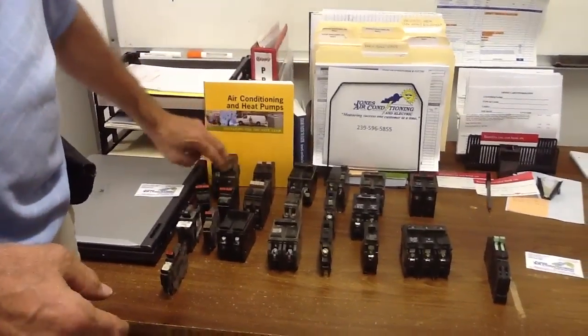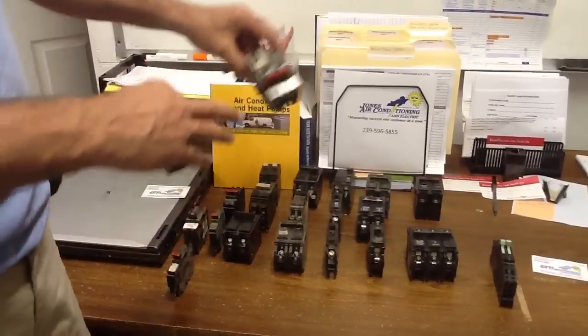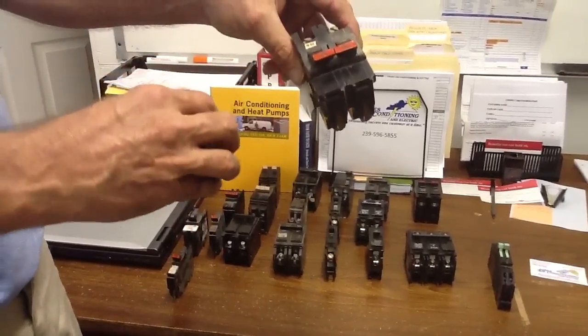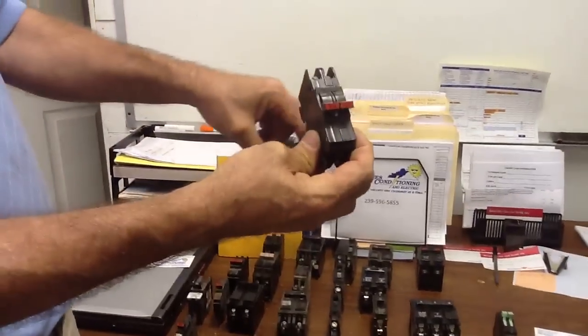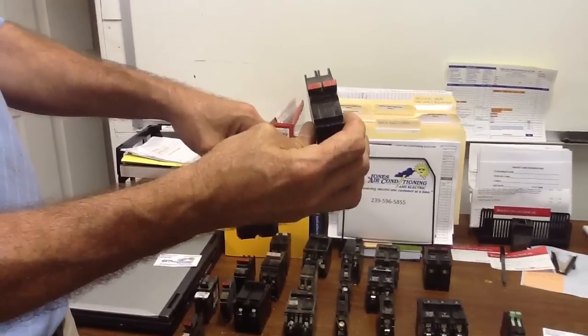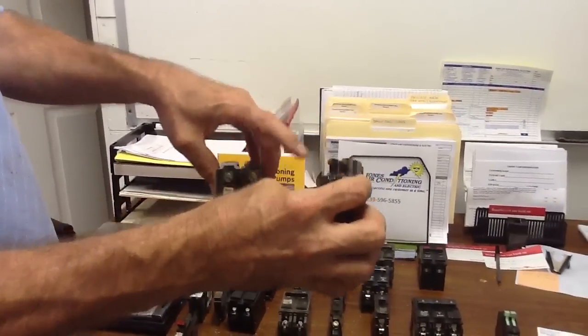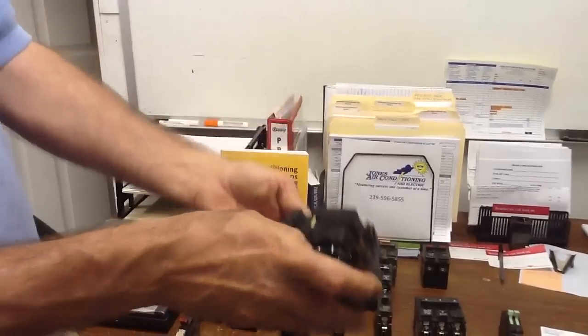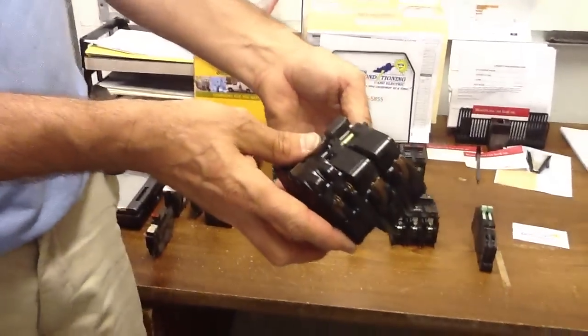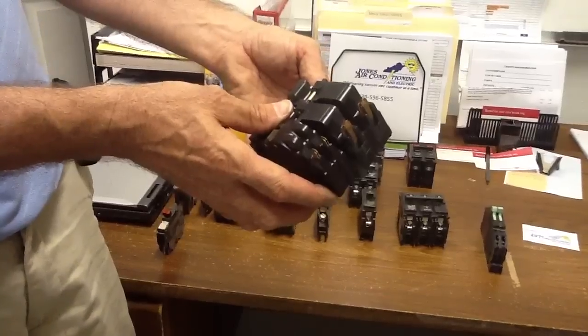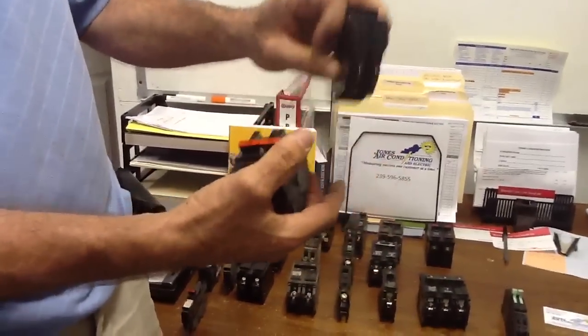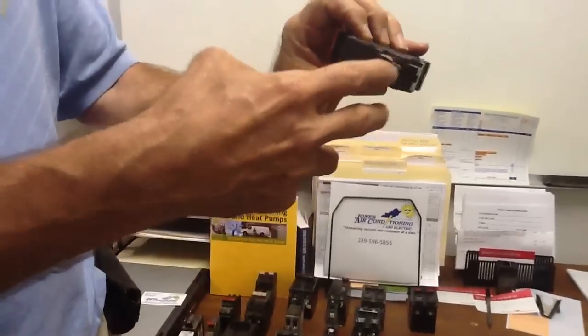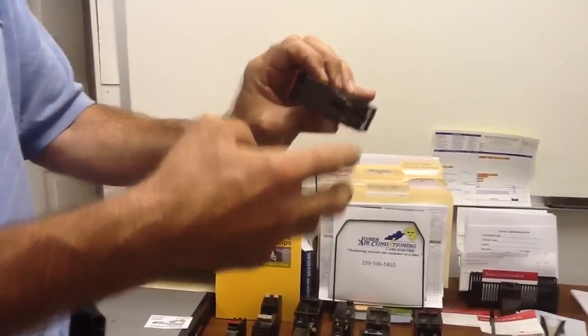Here is a, this is what we call a fat Federal Pacific breaker, double pole. This is a thin Federal Pacific breaker, double pole. They also have different type stab locks if you look, and you've got to be very careful how you put them on the bus bar, because this bus bar sits in two spaces. This bus bar sits in one space, so you have to actually straddle the bus bar.